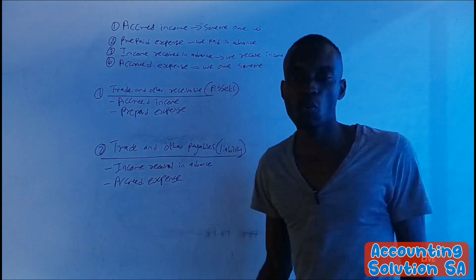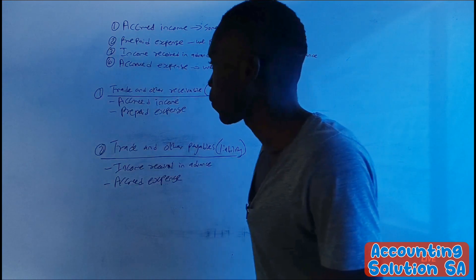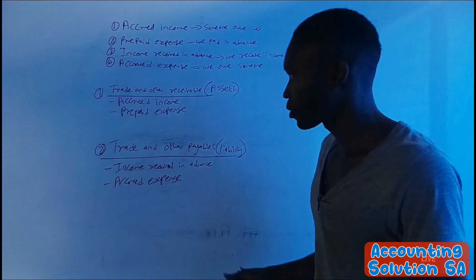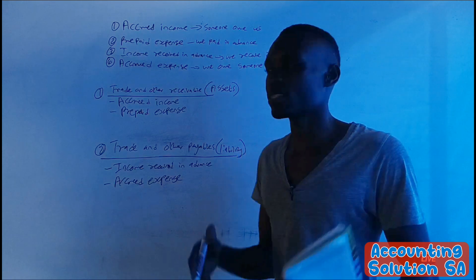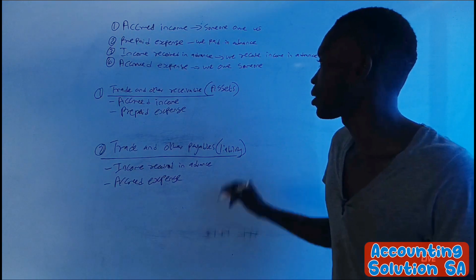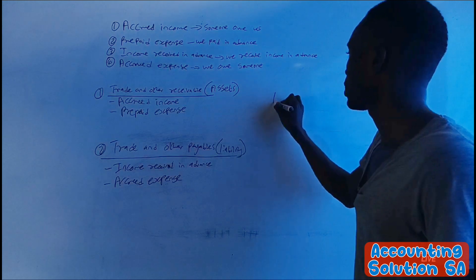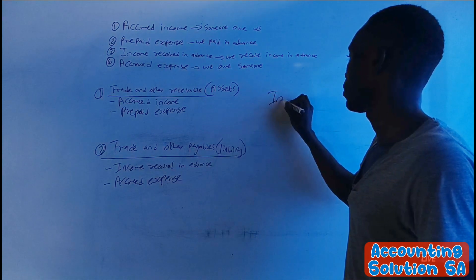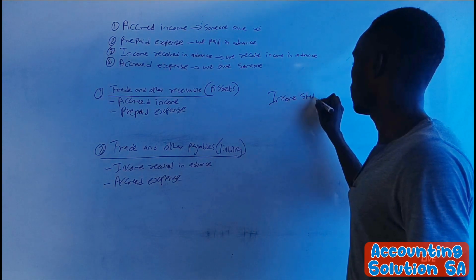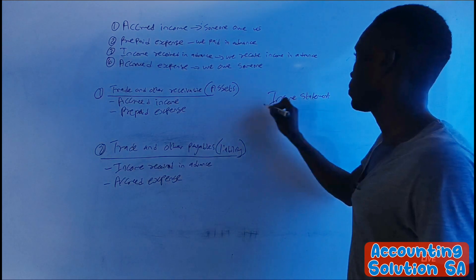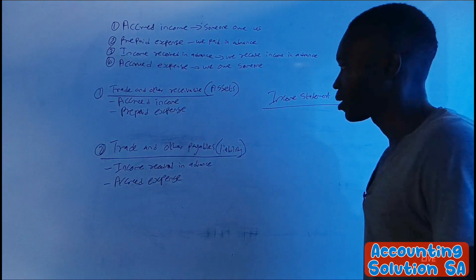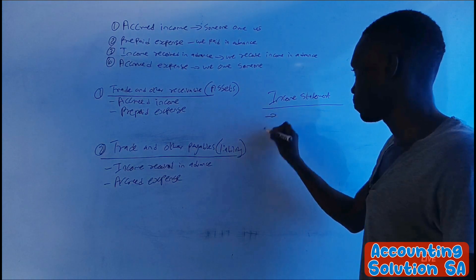When it comes to a balance sheet, you simply record these items as given. But when it comes to the income statement, the principle says we have to record for 12 months.